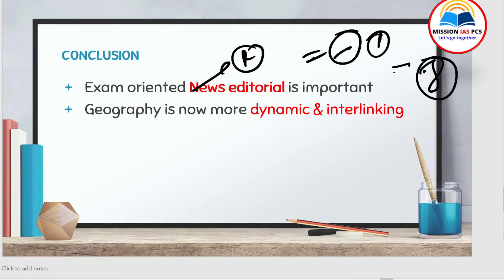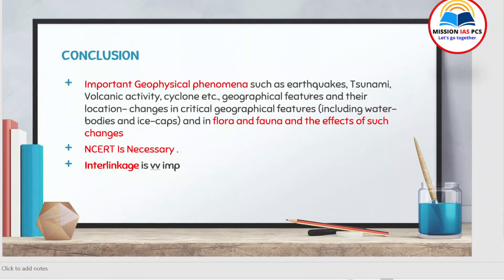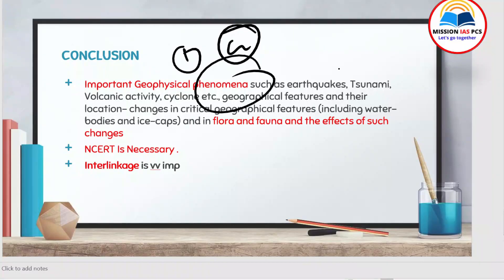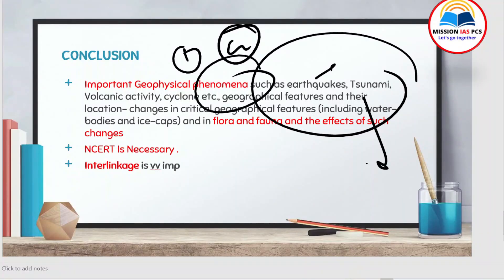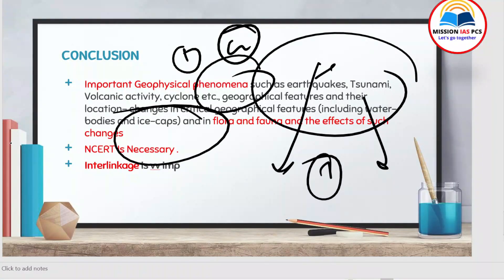For Indian society, we'll make a separate video, but the questions asked there may also be answered through editorial reading. Geography is now becoming more dynamic and interlinking-focused. There is an important topic in the GS Paper 1 syllabus: important geographical phenomena and changes happening because of climate change — this is a very broad topic. NCERT is necessary, and interlinkages are very important to strengthen your preparation.